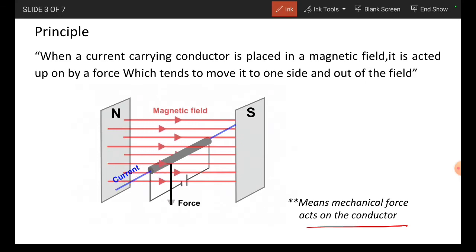Observe this figure. We are considering a permanent magnet, north pole and a south pole. The magnetic field or the flux lines is passing from north to south. In between these two poles, I am placing a conductor, and for this conductor, I am connecting a battery source.